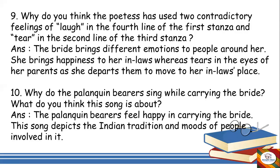Next question: why do you think the poet has used two contradictory feelings — love in the fourth line of the first stanza and tear in the second line of the third stanza? Contradictory means opposite ideas — love and tears. The bride brings different emotions to the people around her. She brings happiness to her in-laws, whereas tears in the eyes of her parents as she departs. At the start she is happy going to her new life, and at the end she is sad leaving her parents.